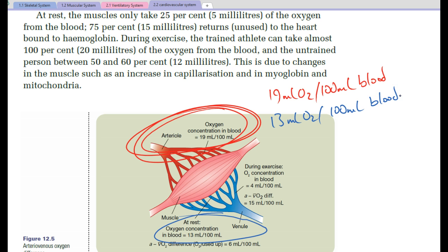During rest, the oxygen concentration in the venules is 13 millilitres of oxygen per 100 ml of blood. So, if we start off with 19, we end up with 13. It means that we have used 6 millilitres of oxygen per 100 ml of blood.